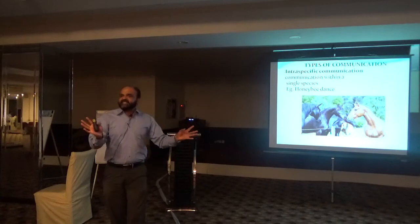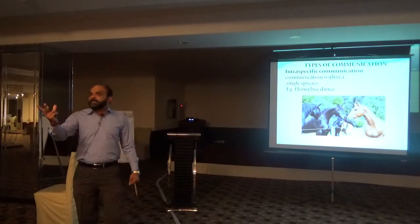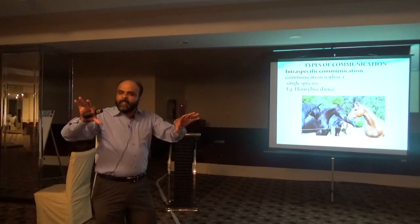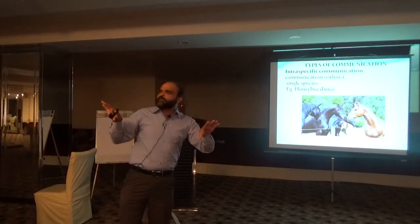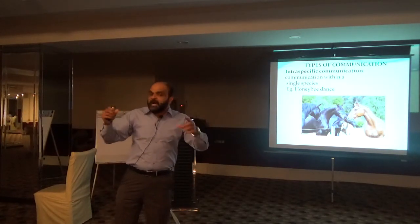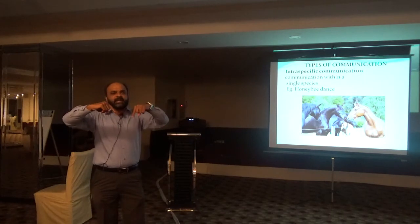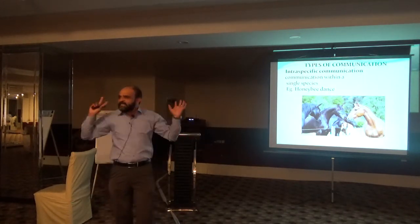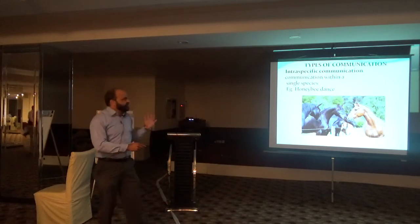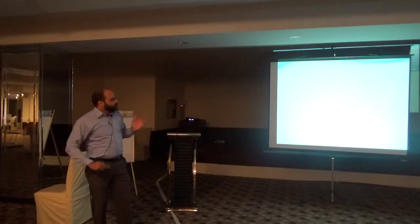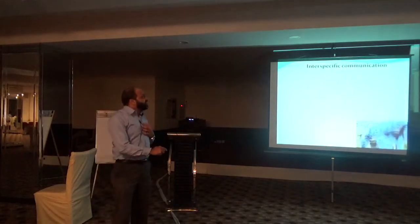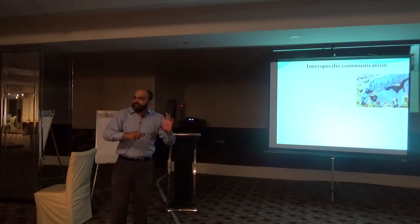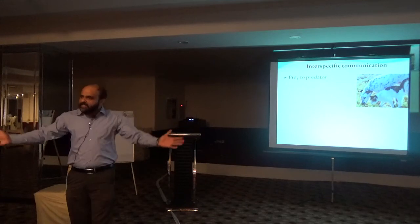One type is intraspecific — when animals are of the same species. If you have ever watched National Geographic, you can see that when they are sitting together, they are communicating with each other — that is their communication system. The second type is interspecific, which is communication between different species, like prey and predator.